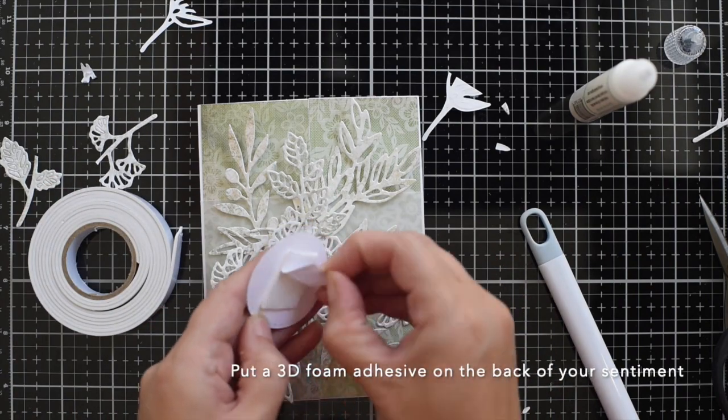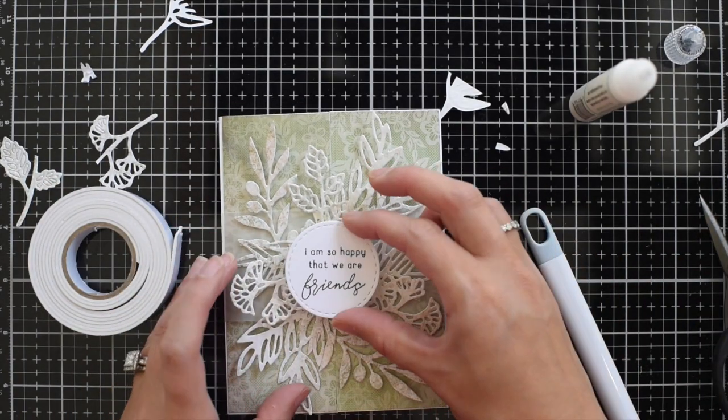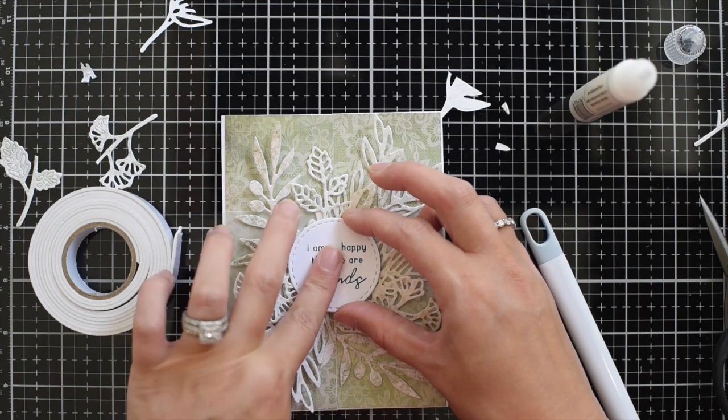So now go ahead and put a 3D foam adhesive on the back of your sentiment circle and then just place it right in the center of your vellum.